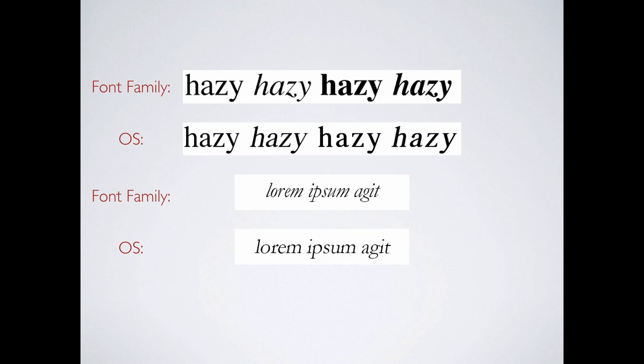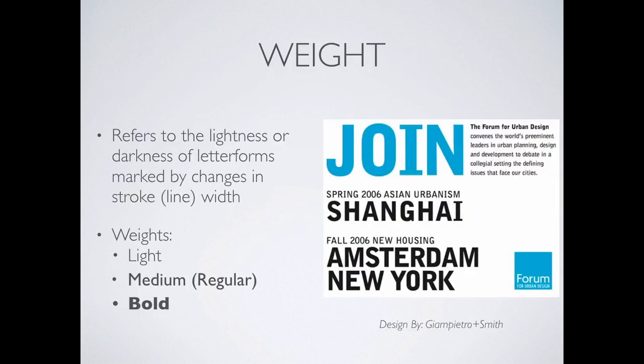This shows up in your font menu when you're selecting the font — you'll see Helvetica New and then a bunch of versions. So rather than just using Ctrl-B for bold or Ctrl-I for italics, which gives you the standard OS versions, choose from within the font family. Weight is the relative lightness or darkness of the letter forms, marked by changes in line width — what we call stroke.